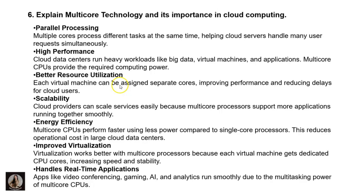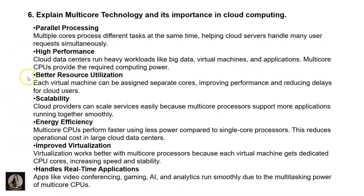Scalability: cloud providers can scale services easily because multi-core processors support more applications running together smoothly. Energy efficiency: multi-core CPUs perform faster using less power compared to single-core processors, reducing operational cost in large cloud data centers. Improved virtualization: each virtual machine gets dedicated CPU cores, increasing speed and stability. Handling real-time applications: apps like video conferencing, gaming, AI, and analytics run smoothly due to the multitasking power of multi-core CPUs.